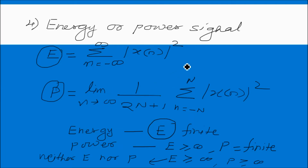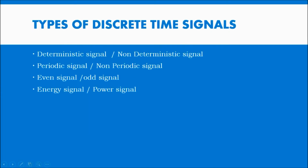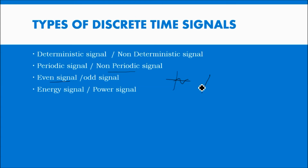So there are 4 types of signals. Deterministic means the value of the signal can be calculated at any time; non-deterministic means it is impossible to calculate. Periodic means it repeats after equal intervals — like a sine wave; non-periodic means it is not repeating — like share market data or rainfall in an area. Even or odd signal, and finally energy and power signal.